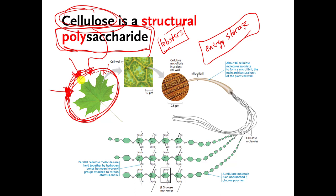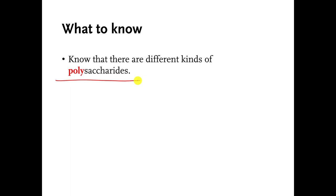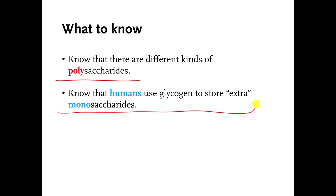And that's all I really want you to know. Polysaccharides can be used for energy storage. They can be used as tough structures in living things as well. You should know that there are different kinds of polysaccharides. You should know that we humans use glycogen as a polysaccharide. And that's it. So that's it for this week's videos. Bye-bye.